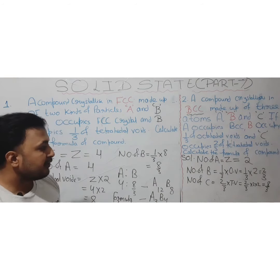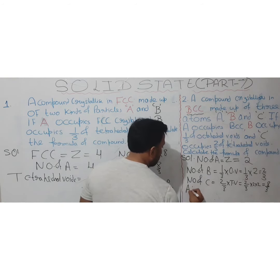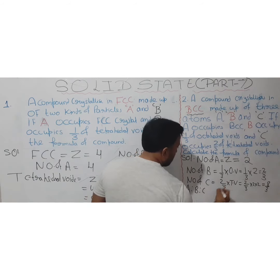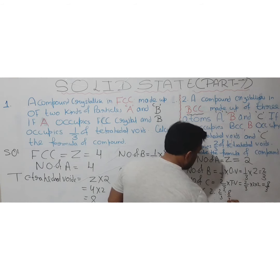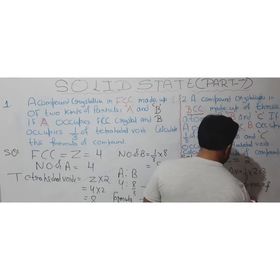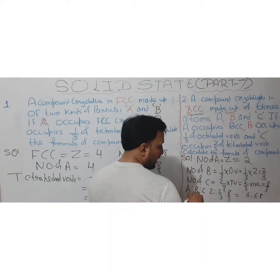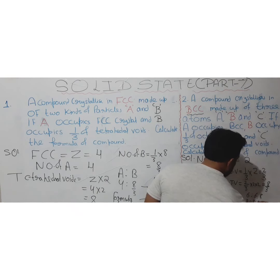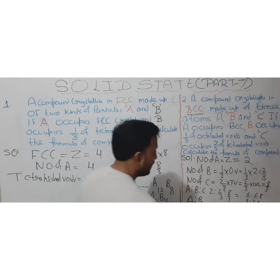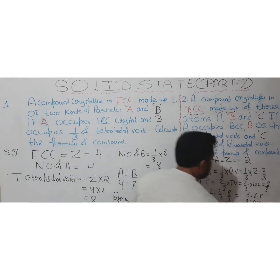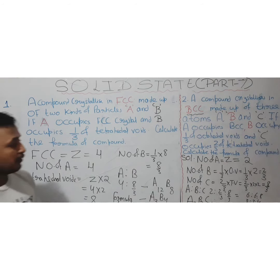We have A = 2, B = 2/3, C = 8/3. Taking the ratio A : B : C = 2 : 2/3 : 8/3. Multiplying by 3 gives 6 : 2 : 8, which simplifies to 3 : 1 : 4. Wait — simplifying 6:6:8 gives 3:3:4. So the formula is A₃B₃C₄.